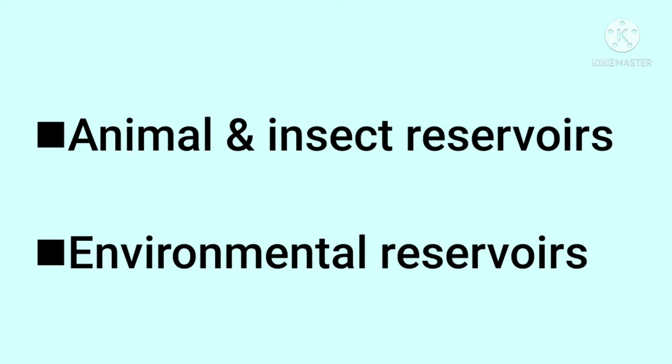Animal and insect reservoirs include mosquitoes, which spread typhoid, malaria, dengue, etc. The third type is Environmental reservoirs. Next, we discuss portal of exit.